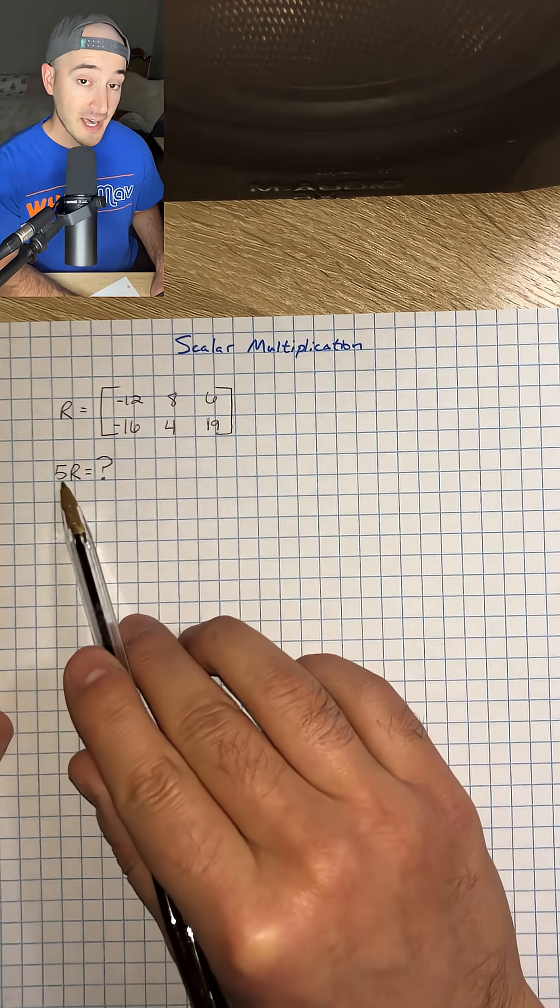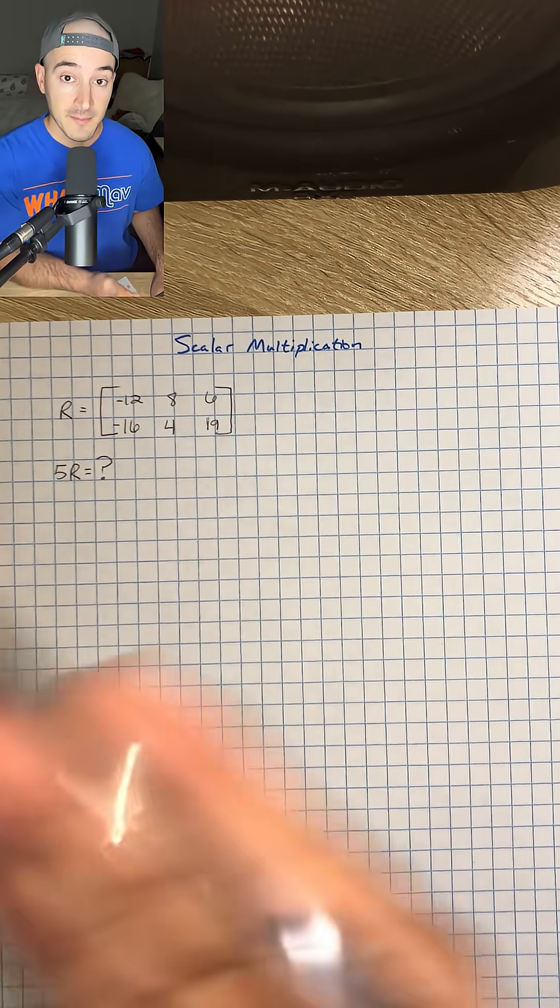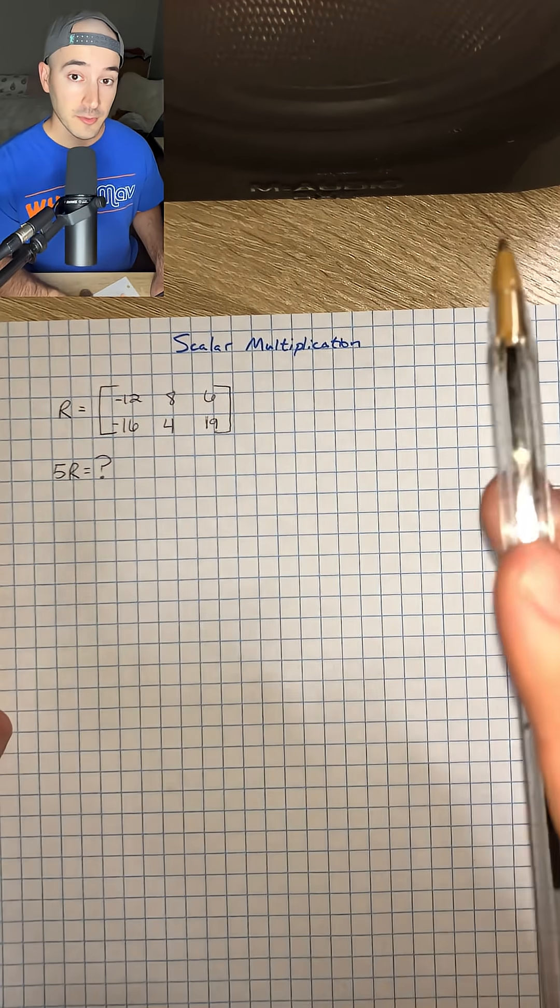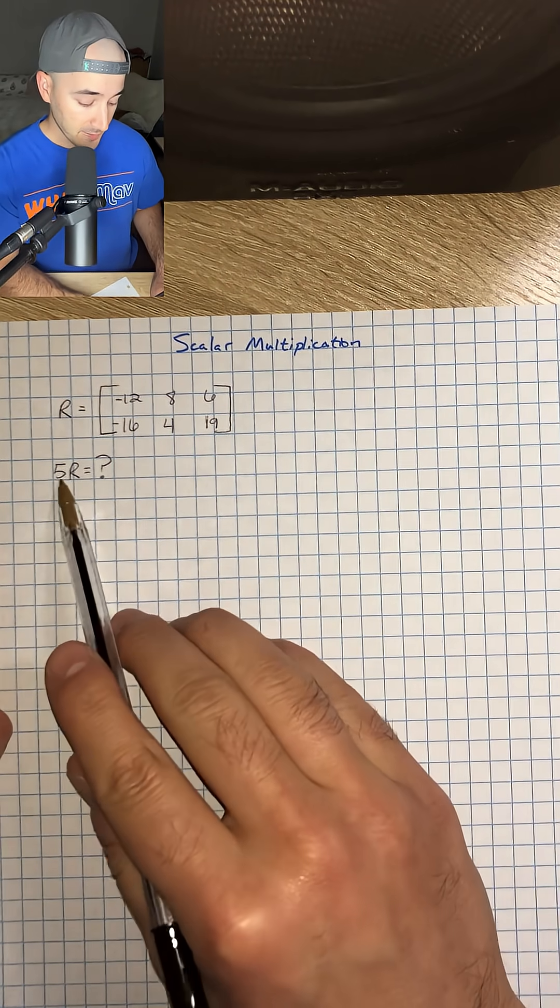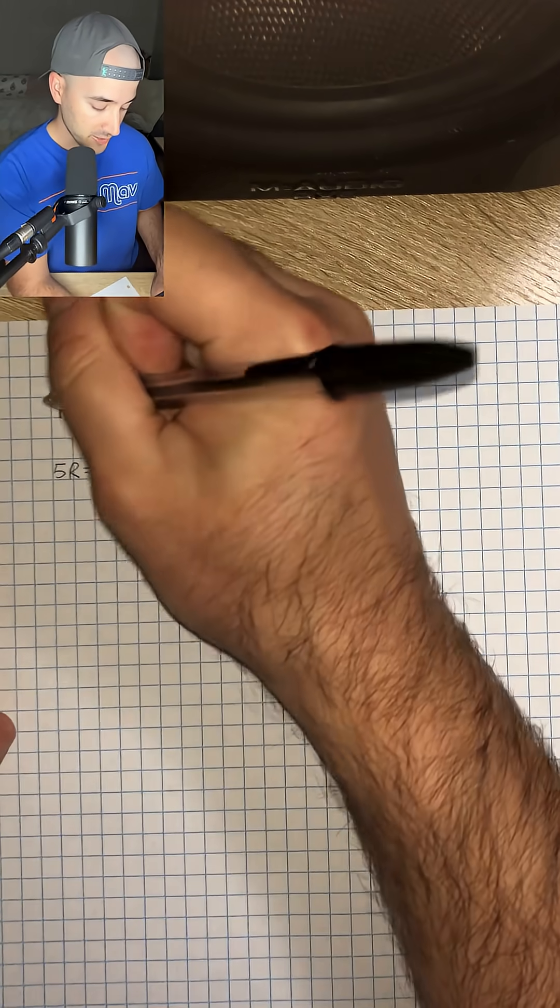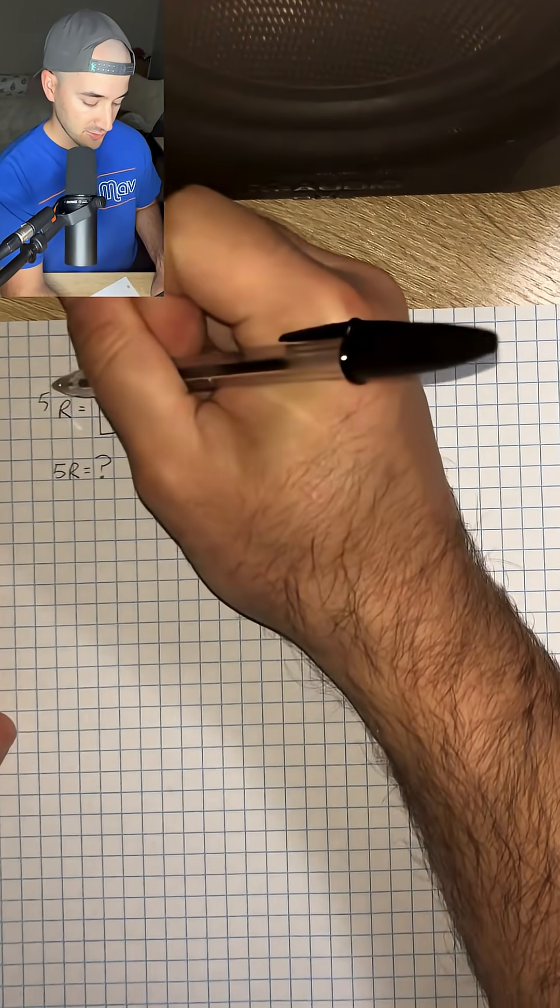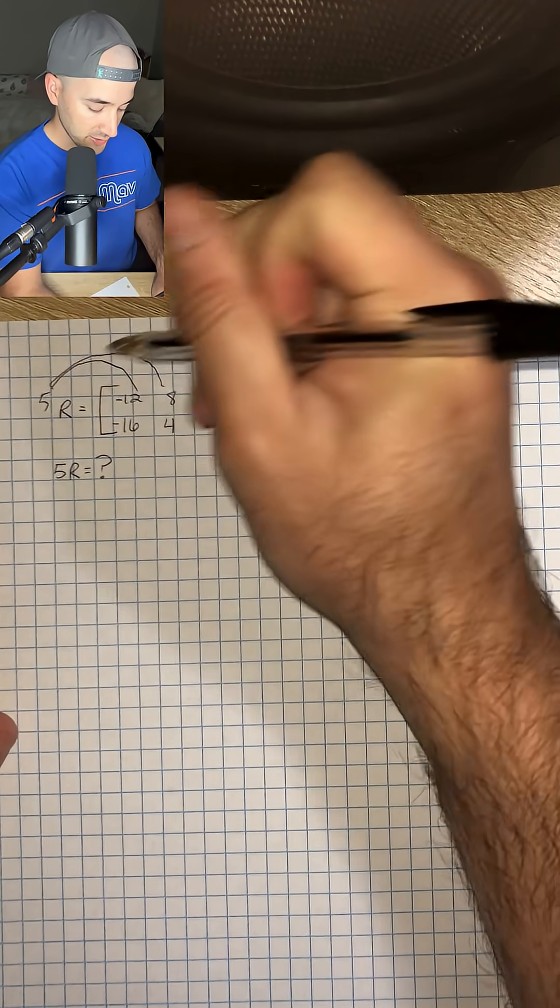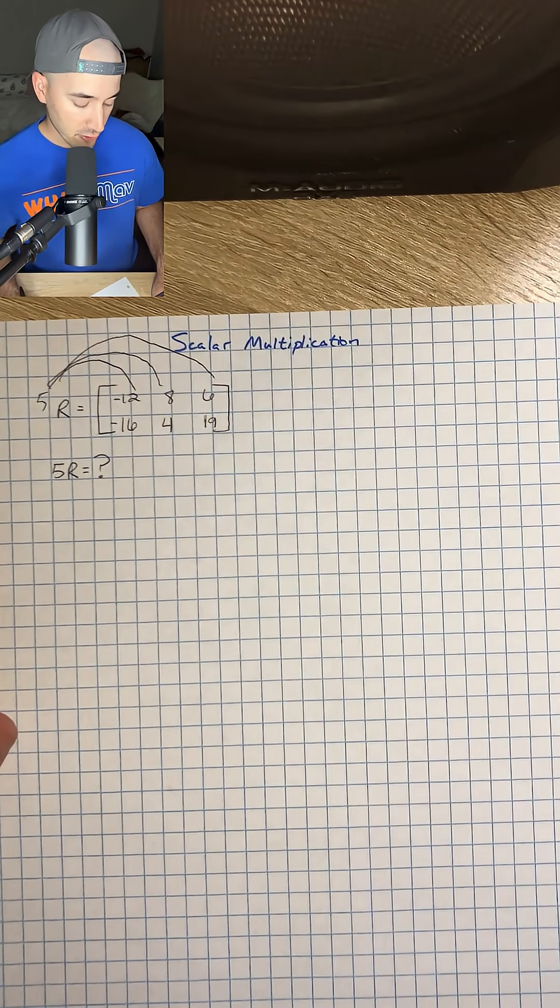We want to know 5r, or 5 times r. This is going to be really simple. We're going to use the distributive property and take our 5 and distribute that to each term inside of our matrix.